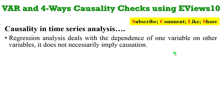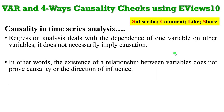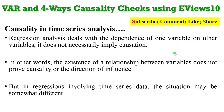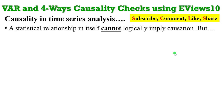We know that regression analysis deals with the dependence of one variable on other variables, but that does not necessarily imply causation. The existence of a relationship between variables does not prove causality or the direction of influence. But in time series analysis, a statistical relationship in itself cannot logically imply causation. However, you can imply causation by subjecting that series to several tests.